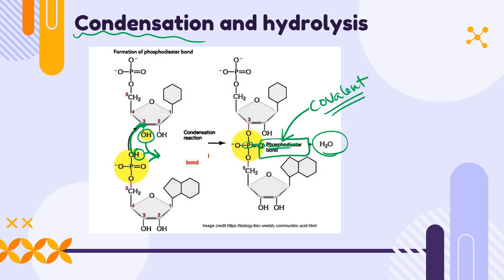Remember we love to count our carbons. Carbon number one is next to the nitrogenous base, then carbon two, three, four, and carbon five next to the phosphate group.